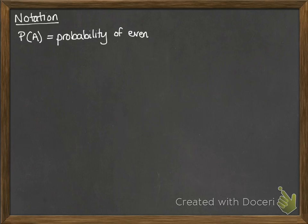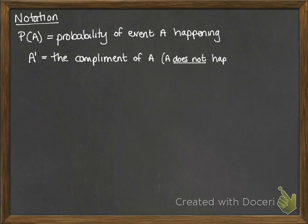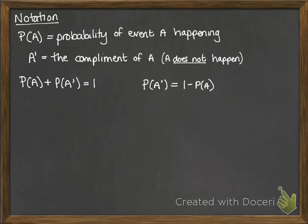P(A) means the probability of an event A happening. A with a little dash at the top is the notation for the complement of A — that means everything where A is not happening; it's the opposite of A. So the probability of A plus the probability of the complement of A must add up to 1, because all probabilities have to add up to 1. If you rearrange that, the probability of the complement would be 1 minus the probability of the event happening.